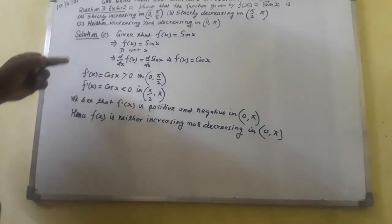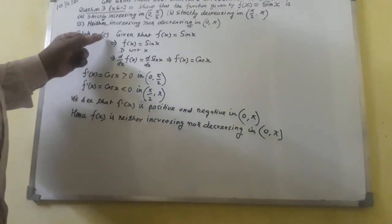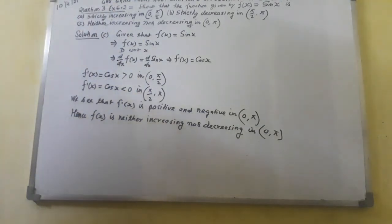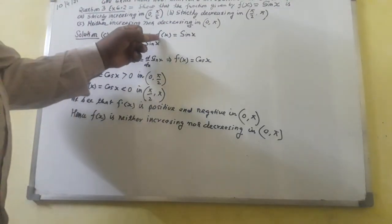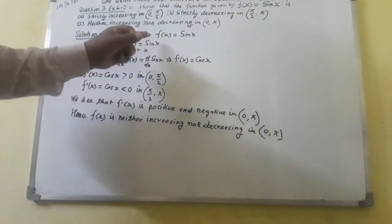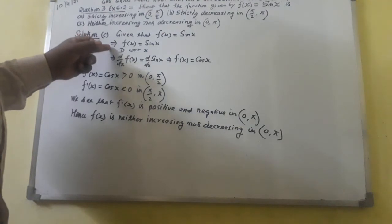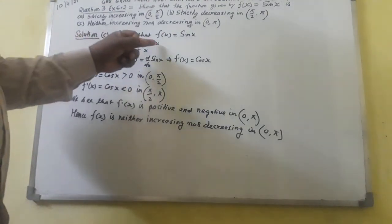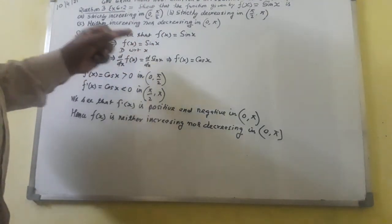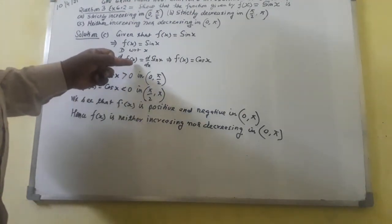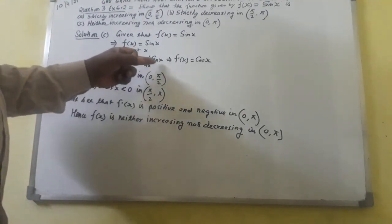Here I have written the solution of para C of question number 3, exercise 6.2, chapter 6, application of derivative, NCERT class 12 mathematics. Given that f of x equals sin x. Differentiating with respect to x: d over dx of f of x equals d over dx of sin x.